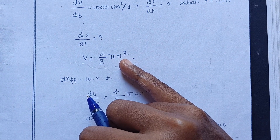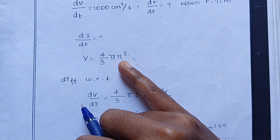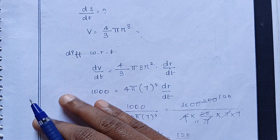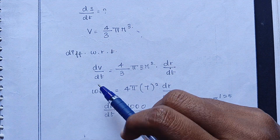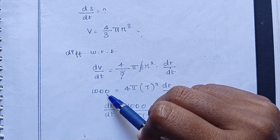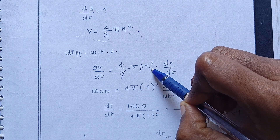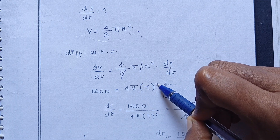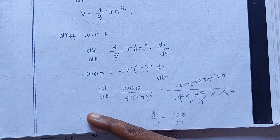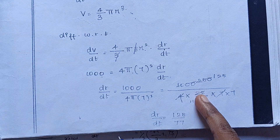We get dV by dt equals 4 pi r squared times dr by dt. Now substituting the values: dV by dt is 1000, r is 7, so 1000 equals 4 pi times 7 squared times dr by dt.